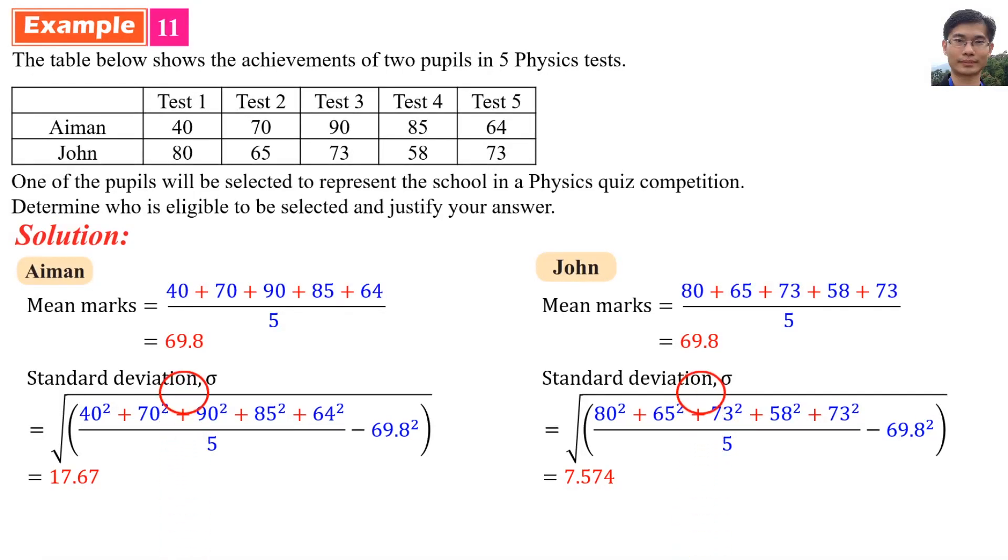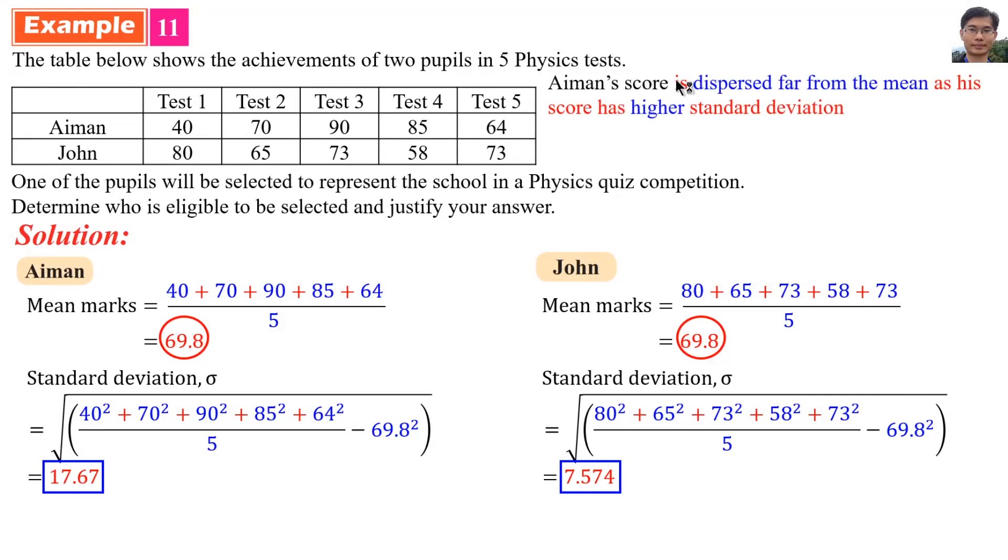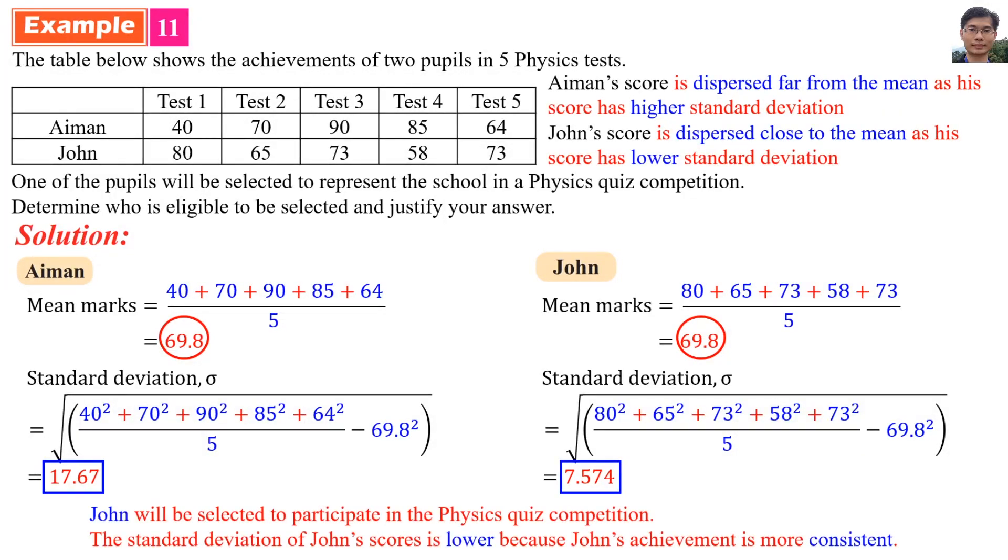So, both of them have the same mean mark, but they have different standard deviations. Aiman's score is dispersed far from the mean as his score has higher standard deviation. However, John's score is dispersed close to the mean as his score has lower standard deviation. In conclusion, John will be selected to participate in the physics quiz competition. The standard deviation of John's score is lower because John's achievement is more consistent.